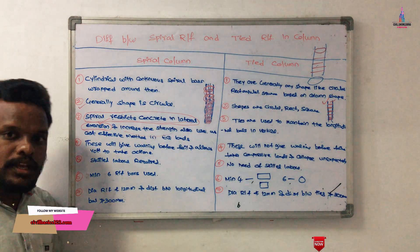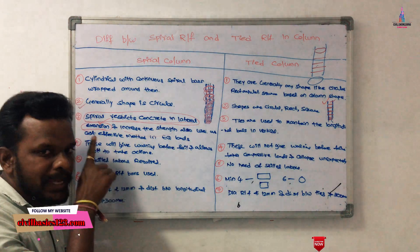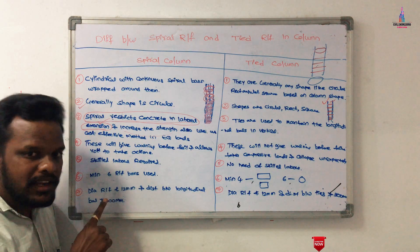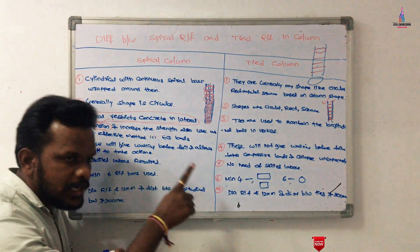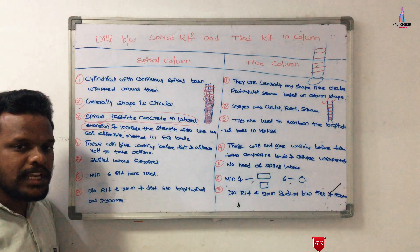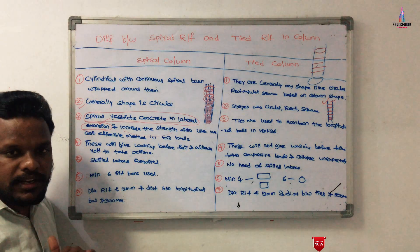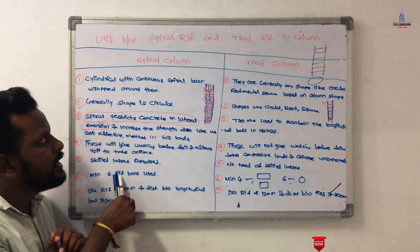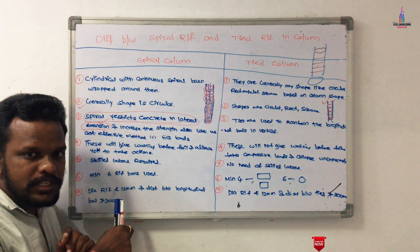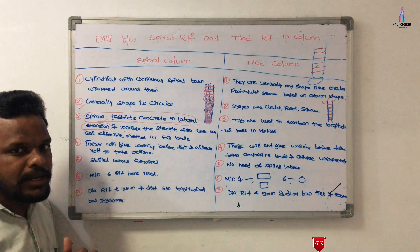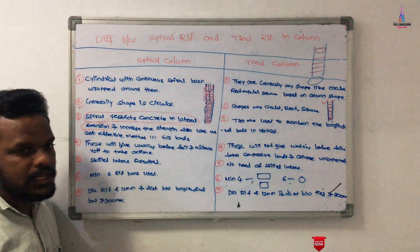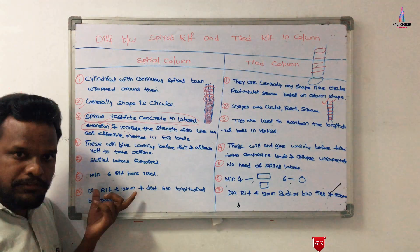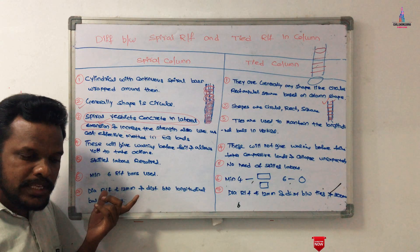For construction of spiral reinforcement columns, skilled labor is required. For tie reinforcement columns, skilled labor is not required. This is a significant practical distinction between the two column types.